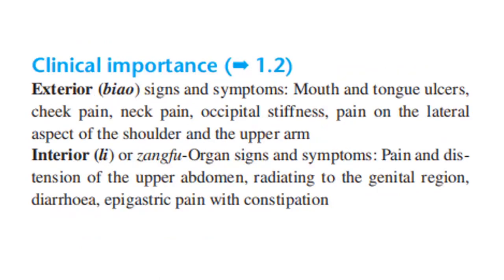Clinical importance: Exterior signs and symptoms include mouth and tongue ulcers, cheek pain, neck pain, occipital stiffness, and pain on the lateral aspect of the shoulder and upper arm. Interior or zang-fu organ signs and symptoms include pain and distension of the upper abdomen projecting to the genital region, diarrhea, and epigastric pain with constipation.